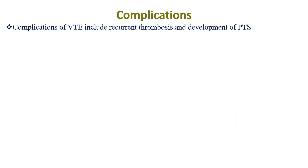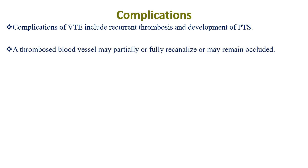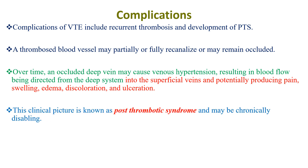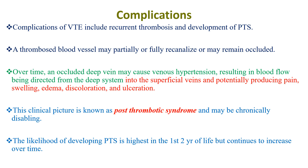Complications of venous thrombosis include recurring thrombosis and the development of post-thrombotic syndrome. A thrombosed blood vessel may partially or fully re-canalize or remain occluded. Over time, an occluded deep vein may cause venous hypertension, resulting in blood flow being redirected into superficial veins, potentially producing pain, swelling, edema, discoloration, and ulceration. This clinical picture is known as post-thrombotic syndrome and may be chronically disabling. The likelihood of developing post-thrombotic syndrome is highest in the first two years but continues to increase over time.